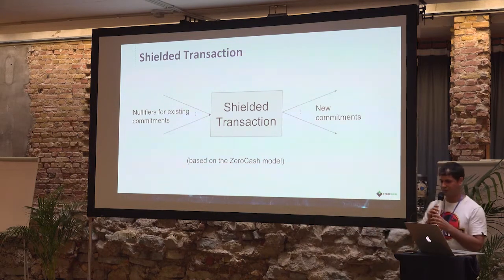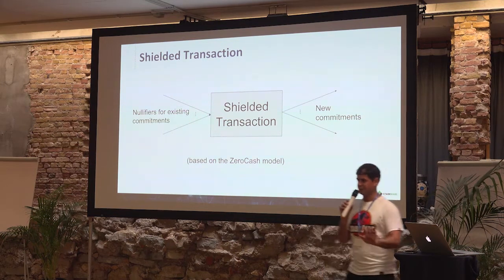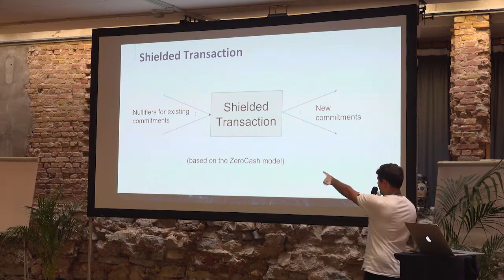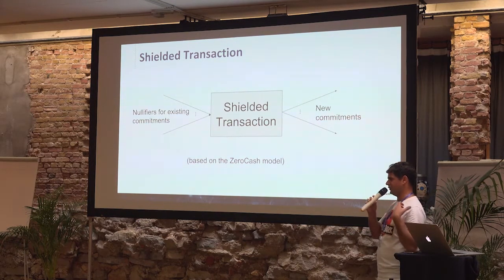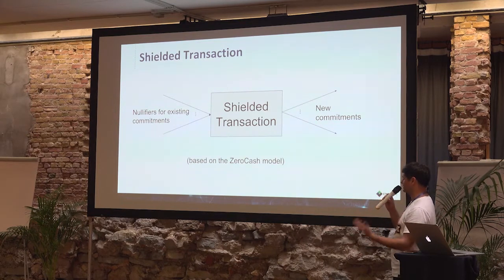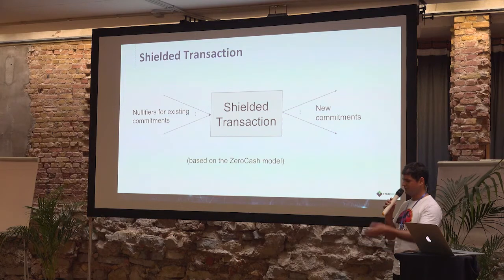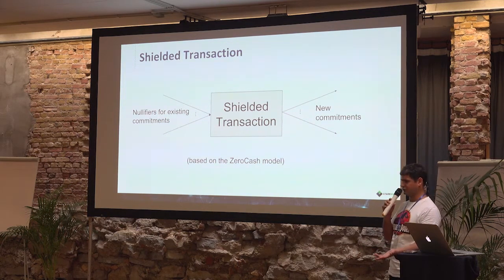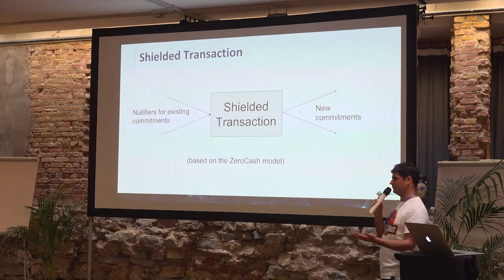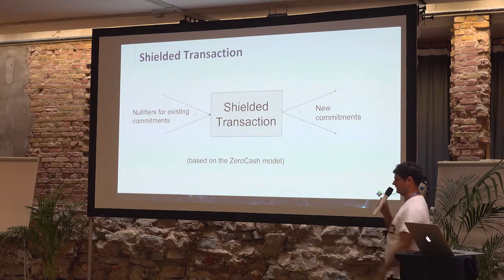Every time I want to make a shielded transaction, I'm presenting nullifiers for commitments that I keep secret. I'm saying: here are the nullifiers of commitments that I know but am not telling you. Here's the proof that those nullifiers are related to those commitments, that I know the secret key related to those commitments, and that I know a path from those commitments to some root presented in the past.